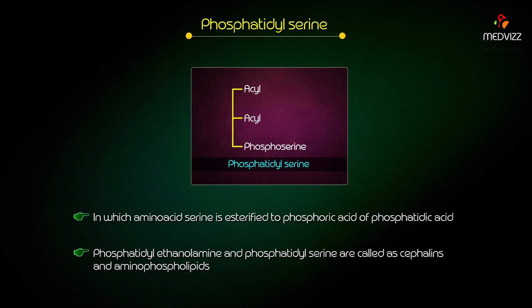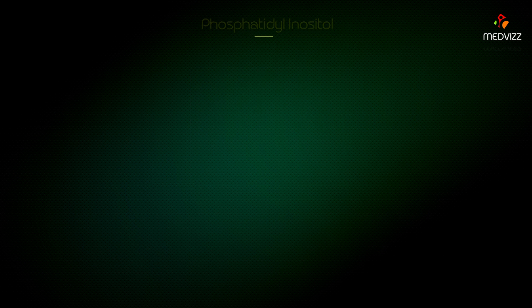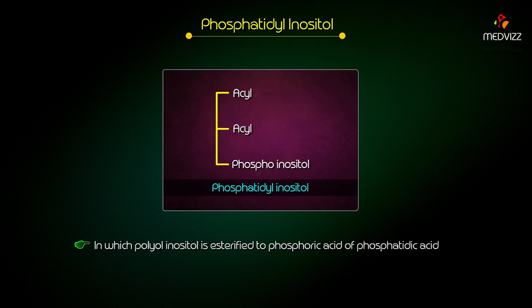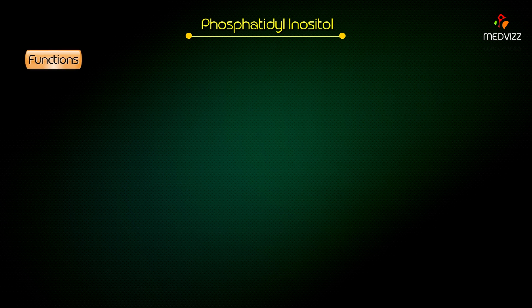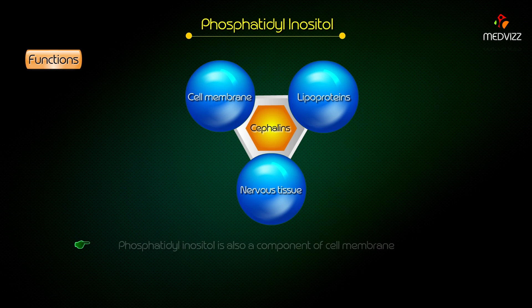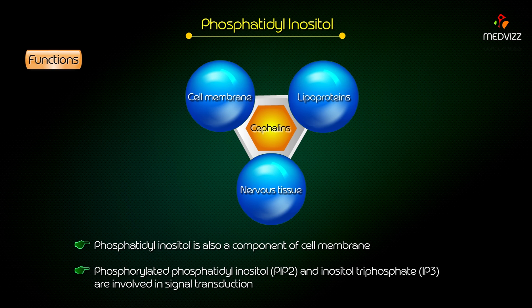Phosphatidylethanolamine and phosphatidylserine are called kephalins and aminophospholipids. Phosphatidylinositol: here, polyol inositol is esterified to phosphoric acid, a phosphatidic acid. Functions: kephalins are major components of the cell membrane, lipoproteins, and nervous tissue. Phosphatidylinositol is also a component of the cell membrane. Further, phosphorylated phosphatidylinositol and inositol triphosphate are involved in signal transduction.